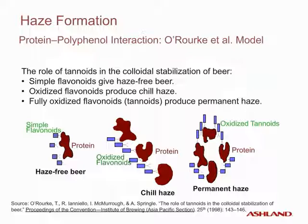Even in fresh beer, which is usually very clear and bright, there are polyphenols complexing with proteins, but you cannot see this with the naked eye and there is no contribution to haze formation. With oxidation, the simple flavonoids become dimers and trimers that then complex with proteins to give reversible chill haze. On further oxidation, the dimers and trimers convert to more polymerized polyphenols referred to as tannoids, which readily combine with proteins to form permanent haze.